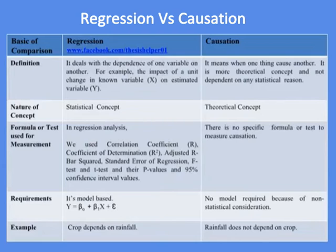The definition of causation is that it means when one thing causes another; it is more of a theoretical concept and not dependent on any statistical reason. The nature of regression is a statistical concept, while the nature of causation is a theoretical concept.